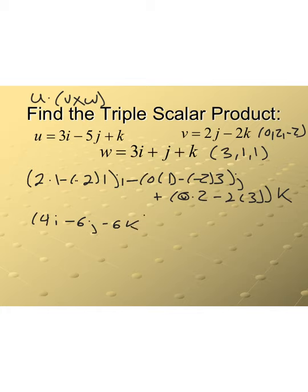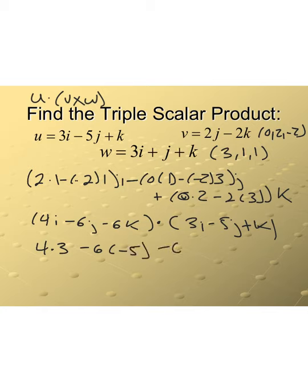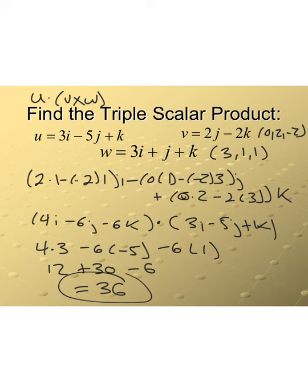Now we take that cross product and compute the dot product with u = 3i − 5j + k: (4·3) + (−6·(−5)) + (−6·1) = 12 + 30 − 6 = 36. The volume of the parallelepiped created by our three vectors is 36 cubic units.